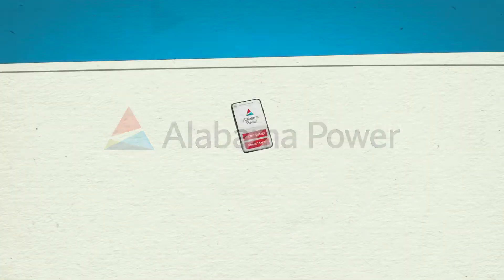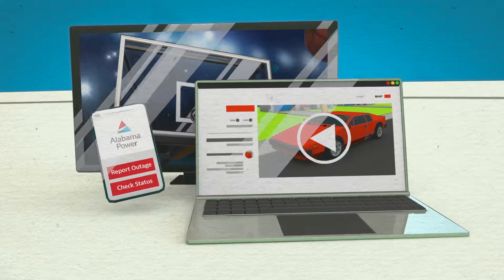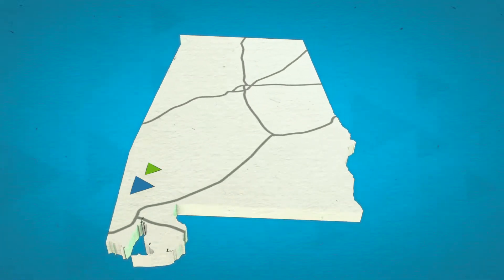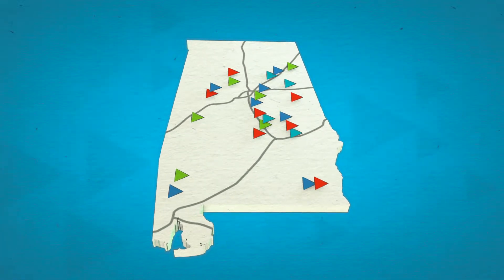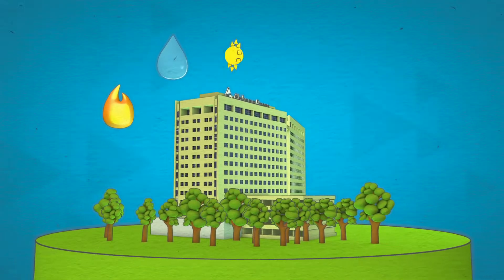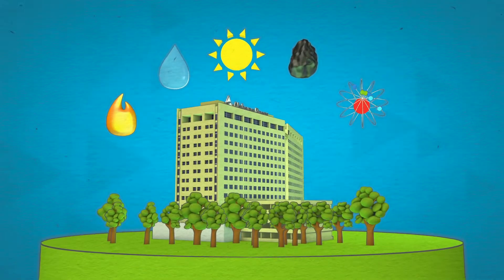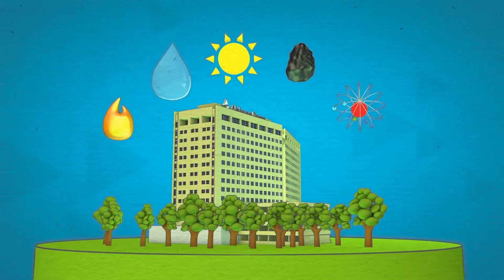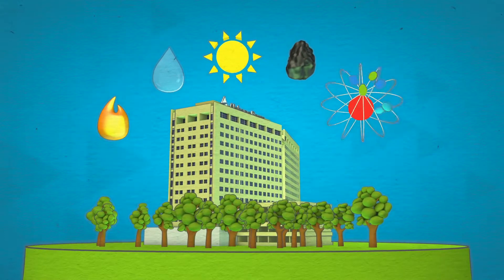Whether you're watching this video on a phone, computer, or TV, your electricity probably came from one of our power plants. At Alabama Power, we use a variety of sources to provide energy to your home and our community, like natural gas, hydro, and other renewables, coal, and nuclear power.